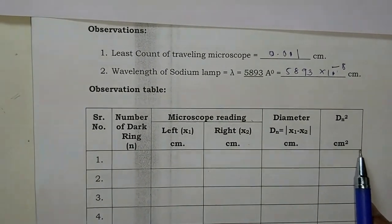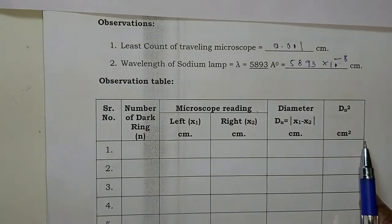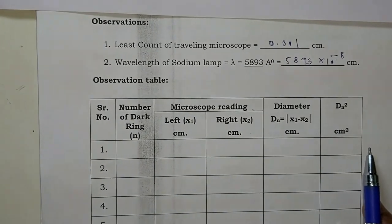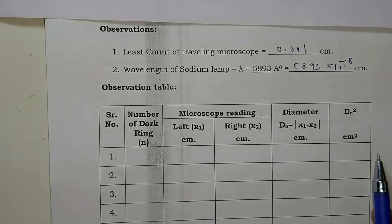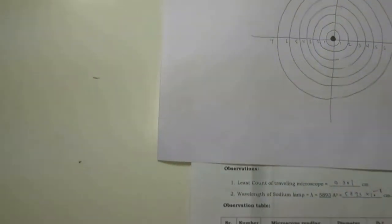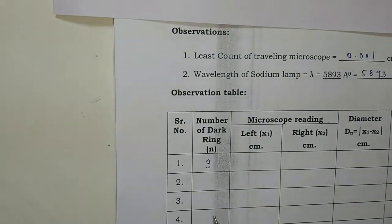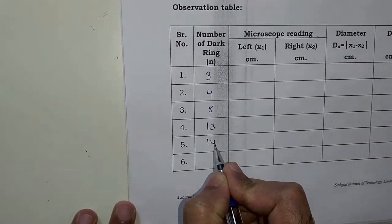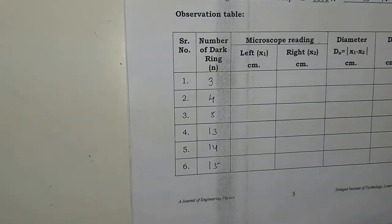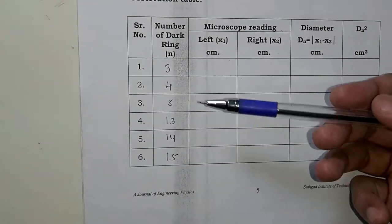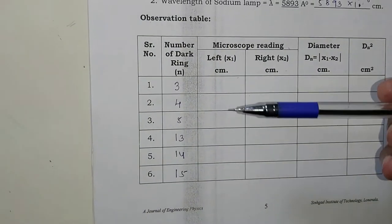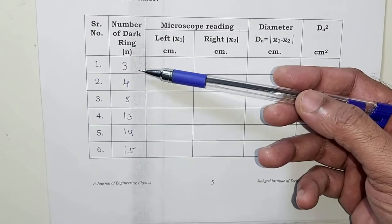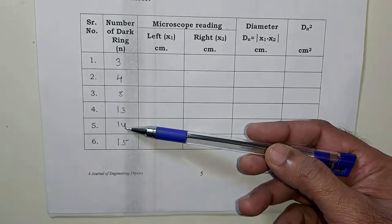Once we get the circular pattern consisting of alternate dark and bright rings, we concentrate on only dark rings. For convenience, we record readings for the 3rd, 4th, and 5th dark rings, then skip ahead and record the 13th, 14th, and 15th dark rings. Measuring every ring would be tedious, so we simplify by selecting these specific rings.